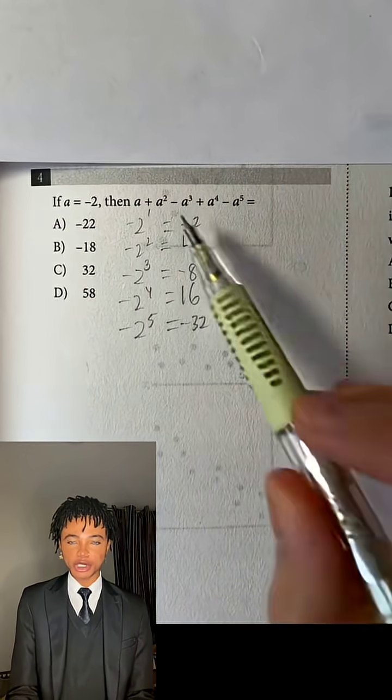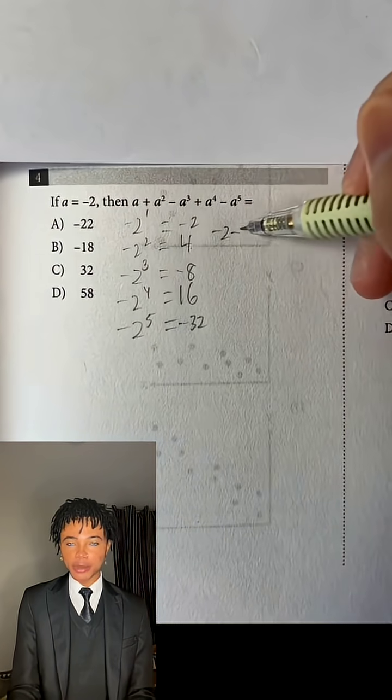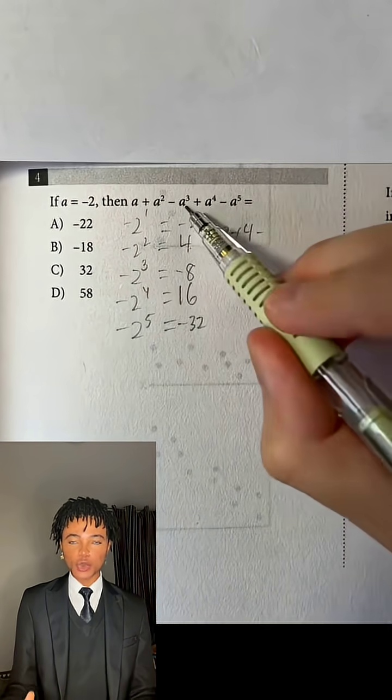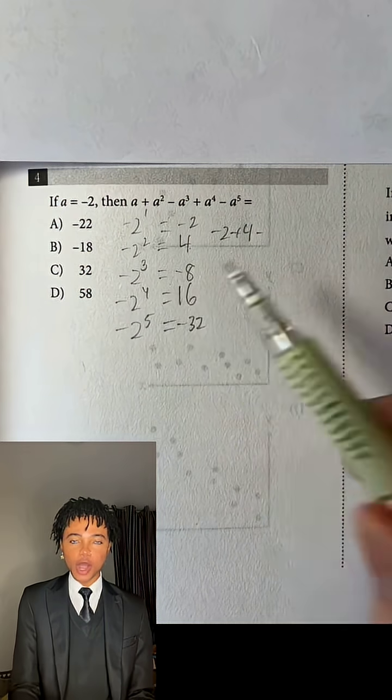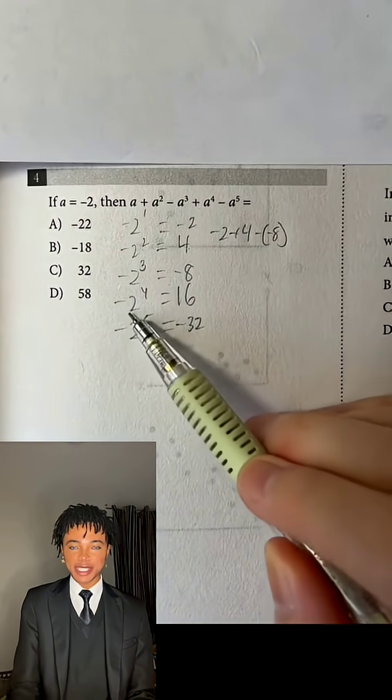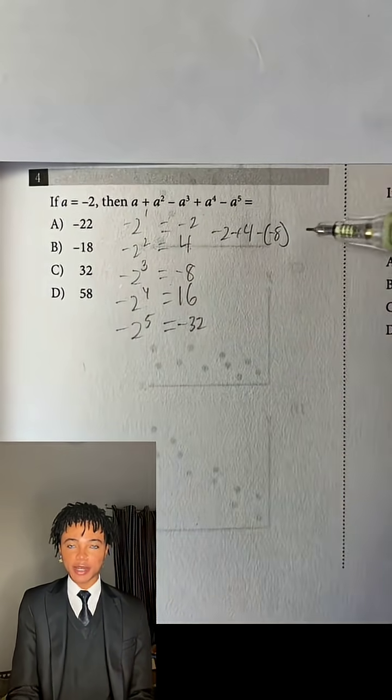So now let's solve. So a again is negative 2 plus a squared, which is negative 2 squared, is 4 minus a cubed, which is minus negative 8, so that's going to be minus negative here, and then plus a raised to the fourth power, so negative 2 raised to the fourth power, which is...